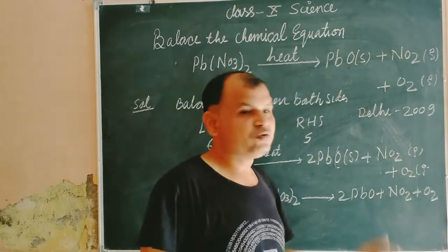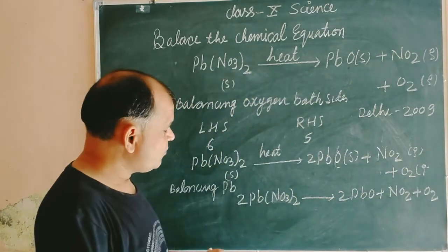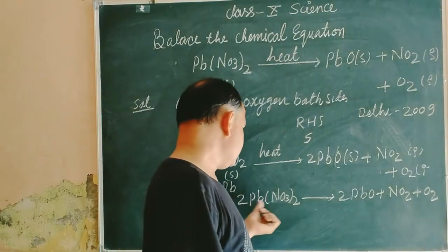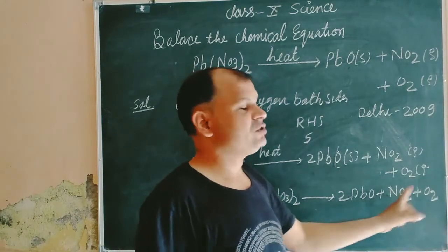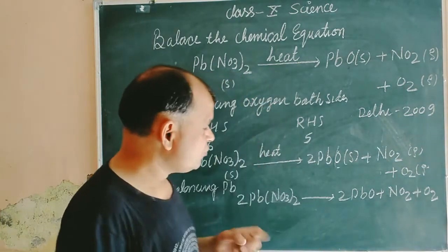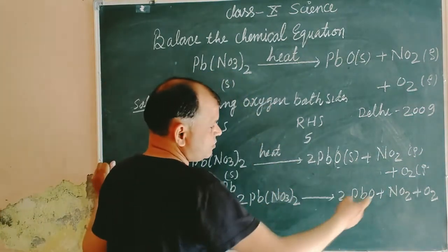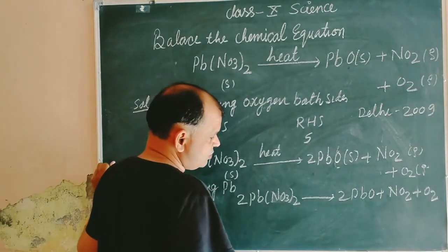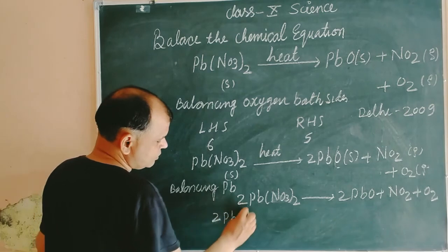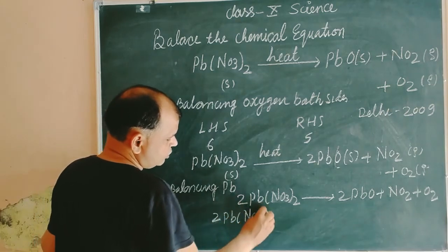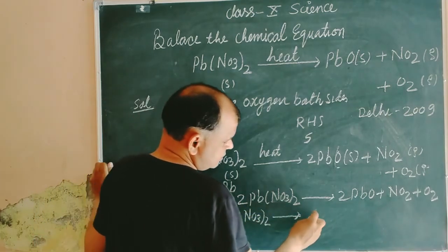Now we have nitrogen. We balance it. Here nitrogen is 2 plus 4, but here nitrogen is only 1. So we multiply the right side by 4. 2 Pb(NO₃)₂ whole twice,